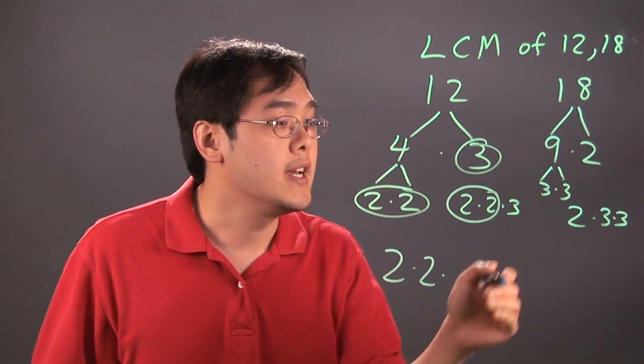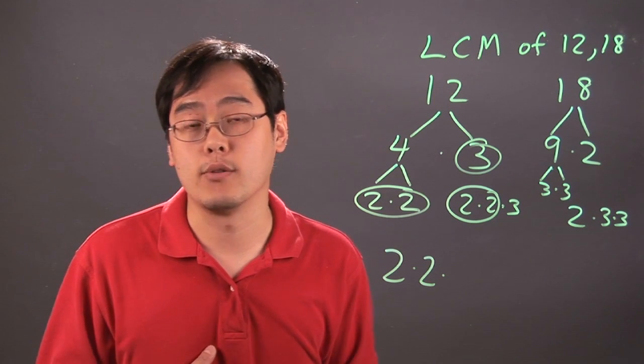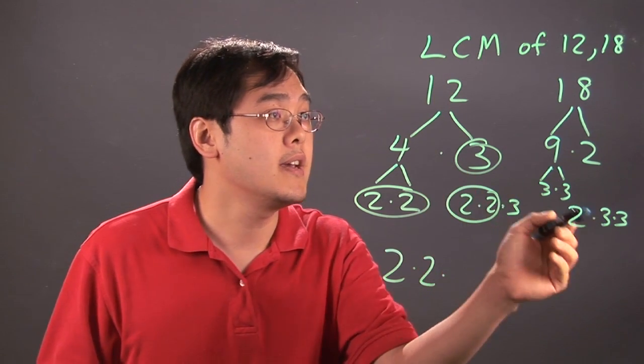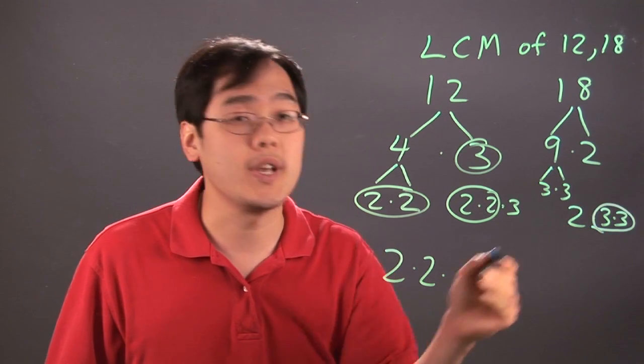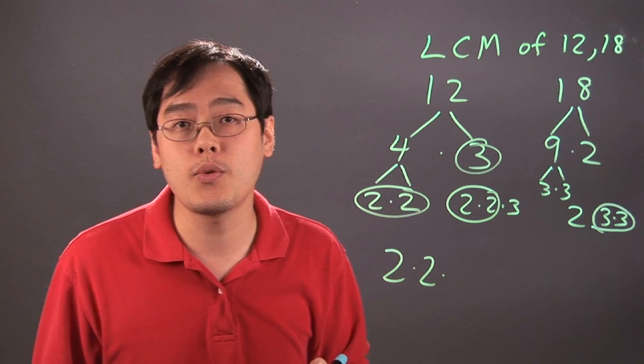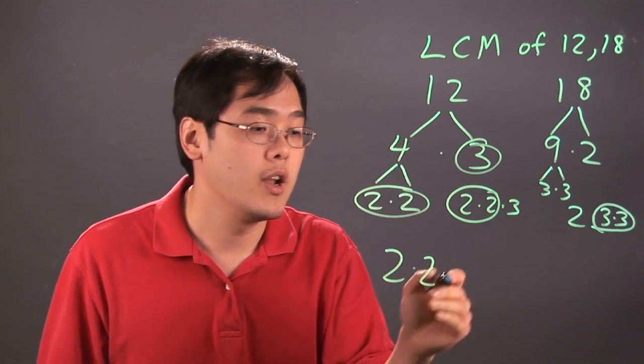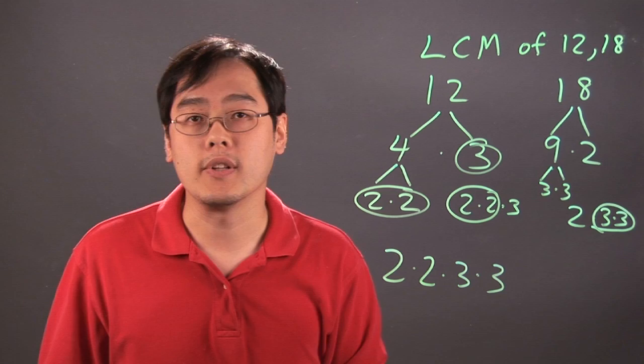Next, you move on to see who has the most 3s and circle that amount. Now between the 12 and 18, the 18 has more 3s, so you're going to circle those 2 3s. Now if you ever have a tie when it comes to LCM, for example if both of them had 2 3s, you just circle one pair. So the 3 and the 3 is part of the least common multiple.